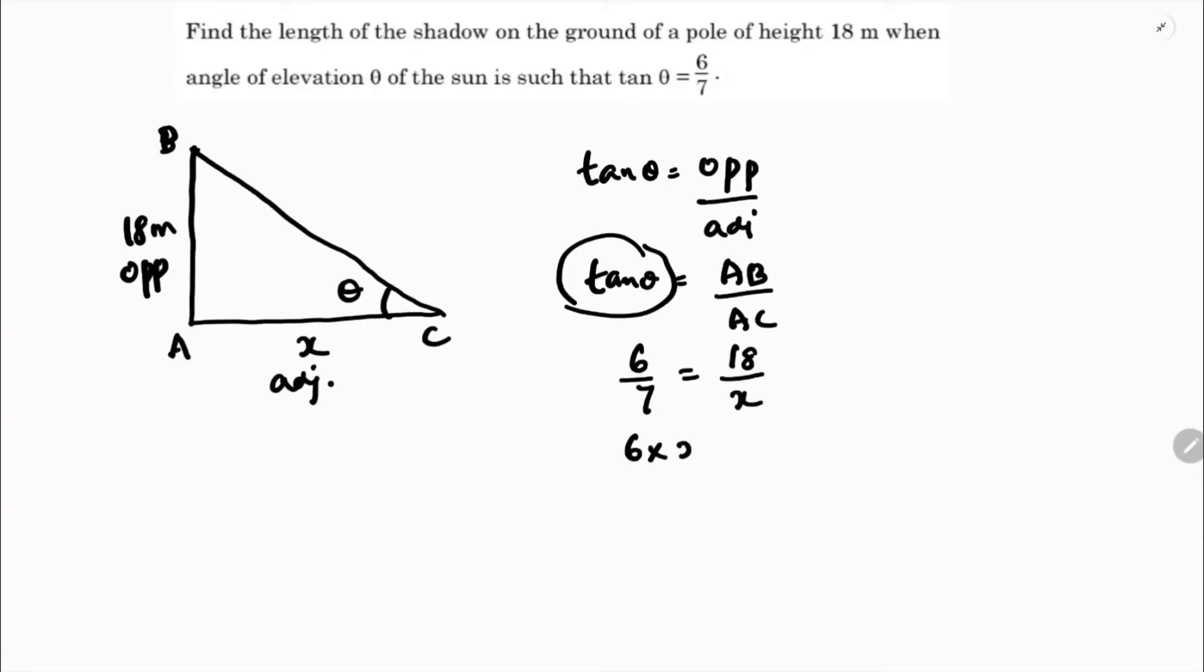If you cross multiply, 6 into x is 18 into 7. So x equals 18 into 7 by 6. 6 times 3 is 18, so x equals 3 into 7, so x equals 21 meters.